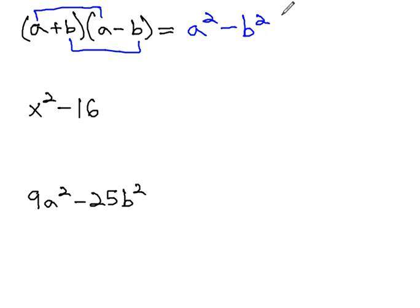We can use this shortcut in reverse as we are factoring. If we see that we are subtracting—the subtraction is important—if we see we are subtracting two things that we can take the square root of, two things that are squared, we can factor it to the sum and the difference of the square roots.